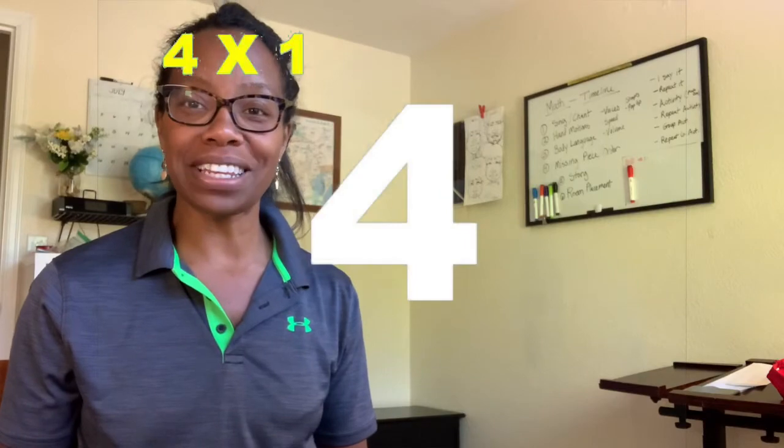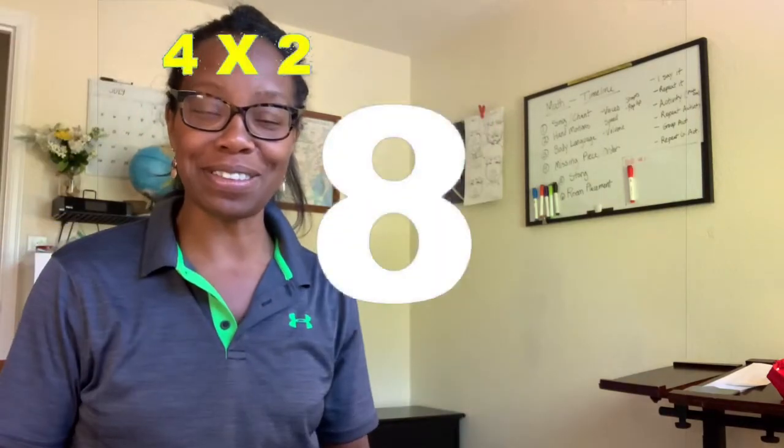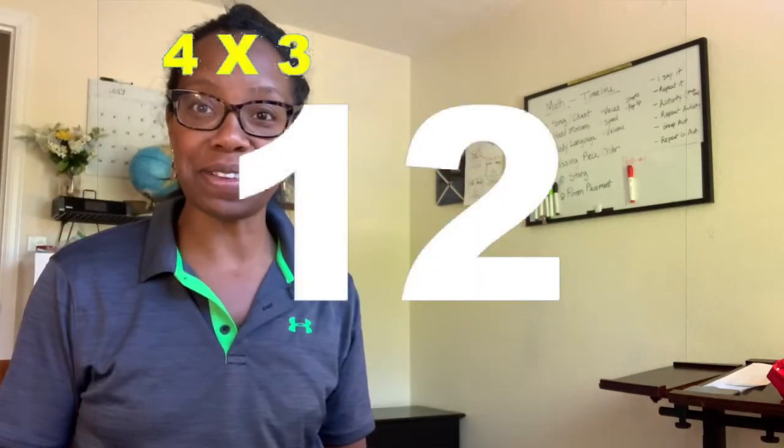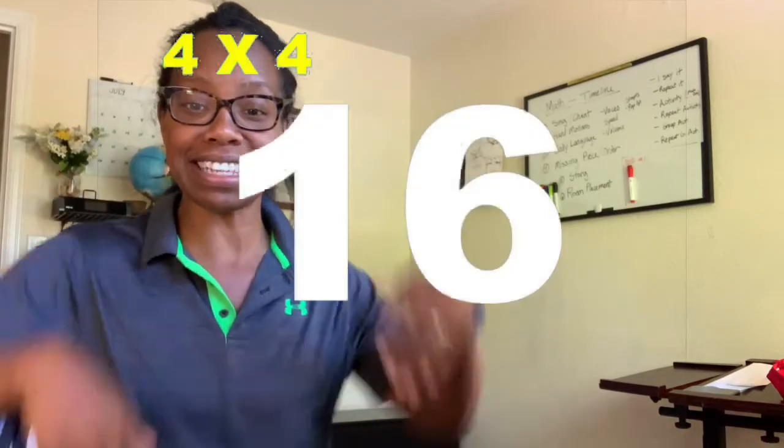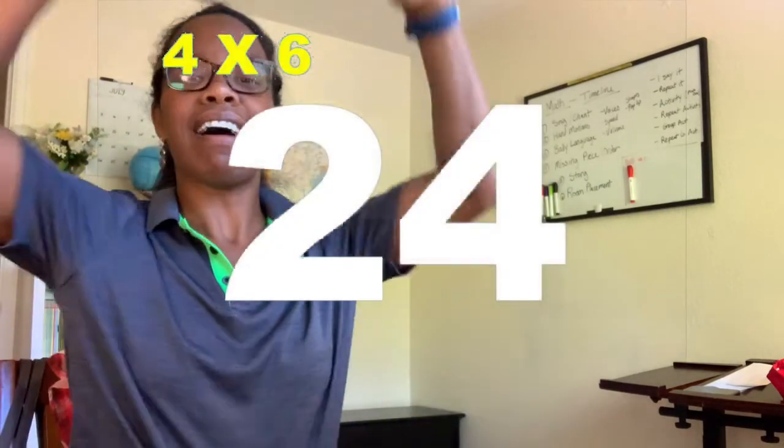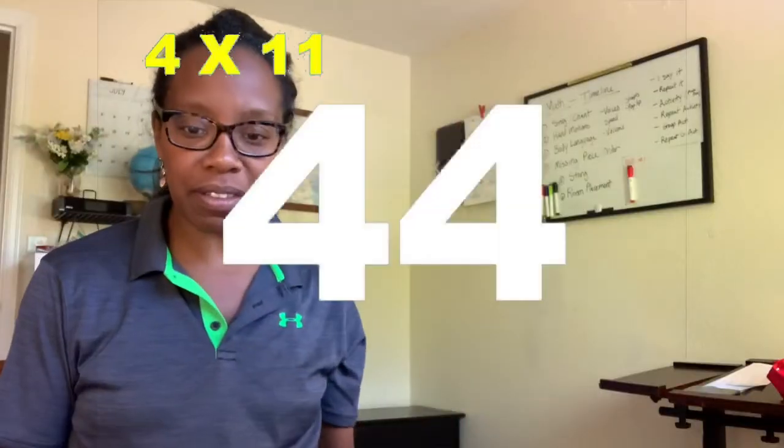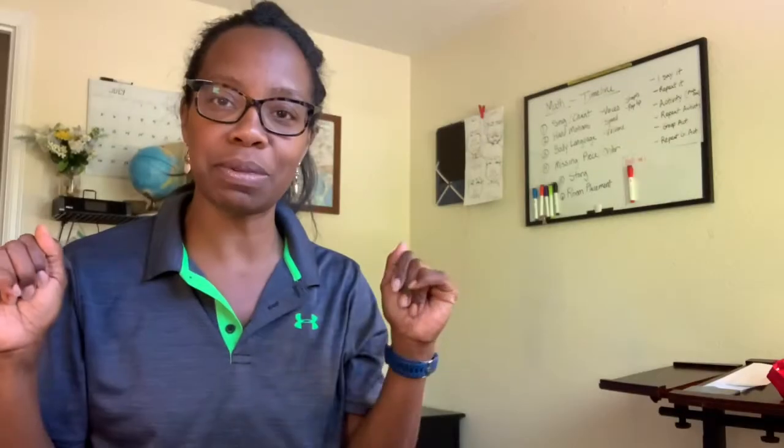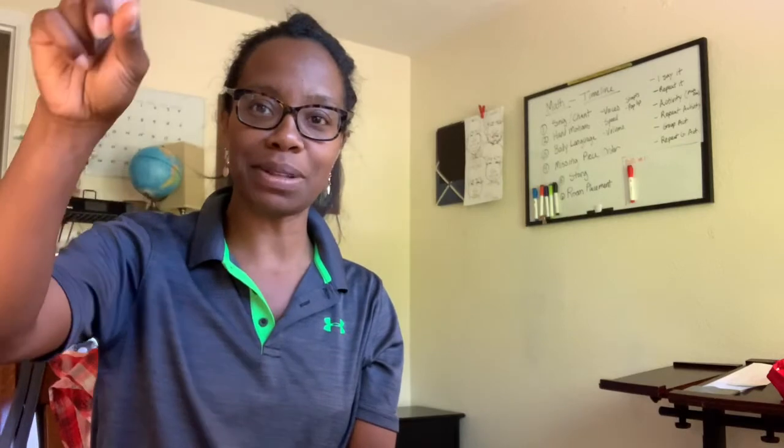Four times one is four. Four times two is eight. Four times three is twelve. Four times four is sixteen. Four times five is twenty. Four times six is twenty-four. Four times seven is... Four times eleven, and so on. Anybody notice a pattern? Does anybody notice a pattern?